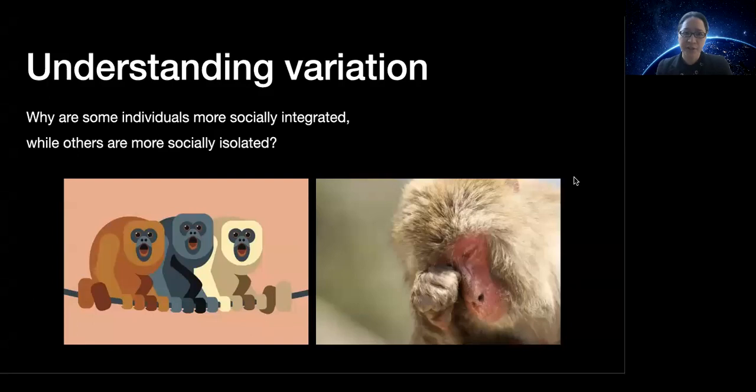If variation in sociality can lead to variation in biological fitness, then a logical question to ask is, what explains why some individuals are more socially integrated in their groups, while others are more socially isolated? This is a complicated question that will necessitate many different types of analyses to answer, but I want to begin that journey with an understanding about how we can disentangle intrinsic versus extrinsic sources of variation in sociality.